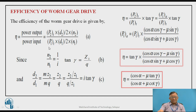Similarly, power input is the tangential force on the worm multiplied by its pitch radius and speed. Taking the ratio gives efficiency. In this ratio, n2/n1 appears as one factor. The speed ratio is n1/n2 = i, so n2/n1 = 1/i. Also, d2/d1 appears, where d2 is the pitch circle diameter of the worm wheel equal to m times z2, and d1 is the pitch circle diameter of the worm equal to m times q. Therefore d2/d1 = z2/q.